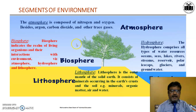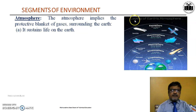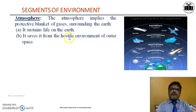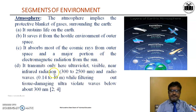The segments of environment are atmosphere, hydrosphere, lithosphere, and biosphere. The atmosphere is the protective blanket of gases surrounding the earth. It sustains life on earth, saves us from the hostile environment of outer space, and absorbs most cosmic rays from outer space and a major portion of electromagnetic radiation from the sun. It transmits only ultraviolet, visible, near-infrared radiation and radio waves, while filtering out tissue-damaging ultraviolet waves below about 300 nm.